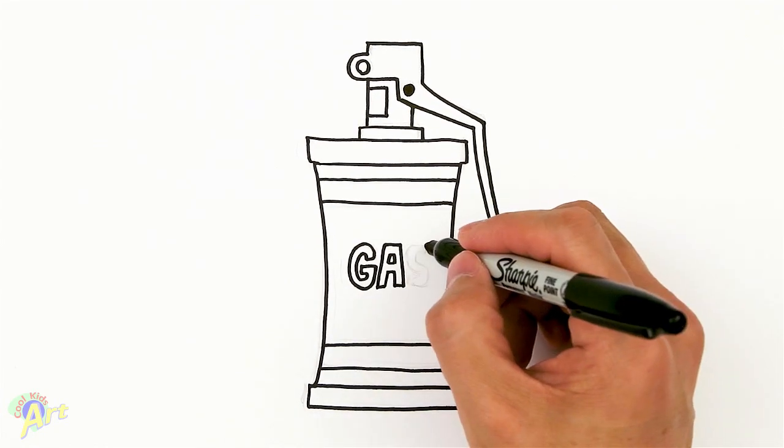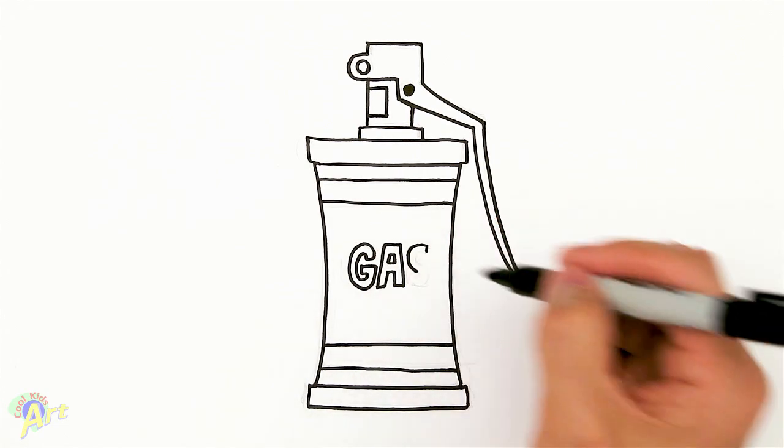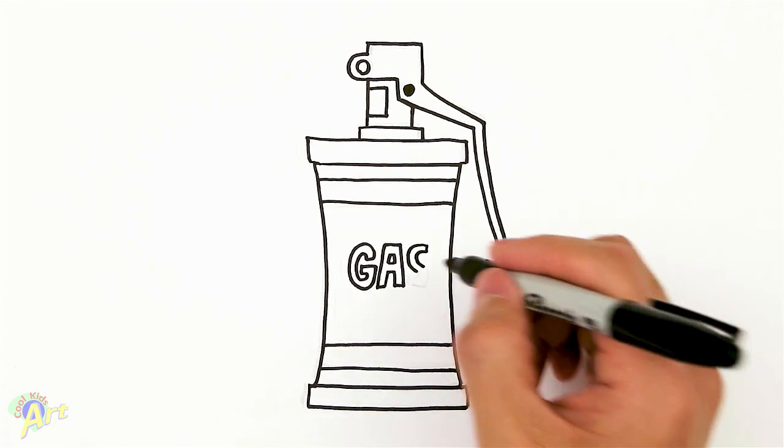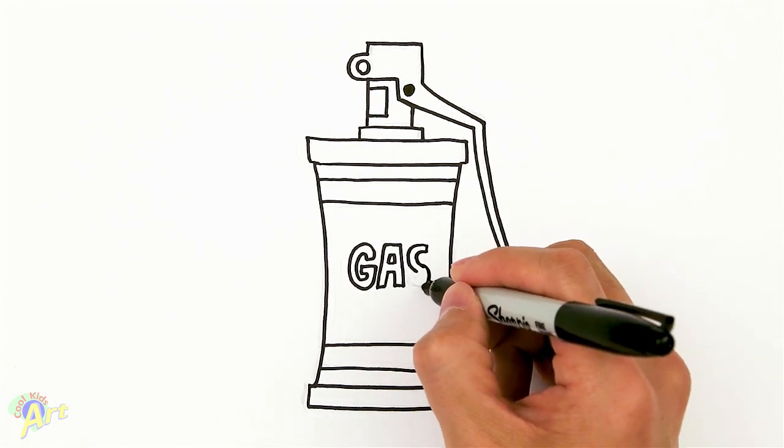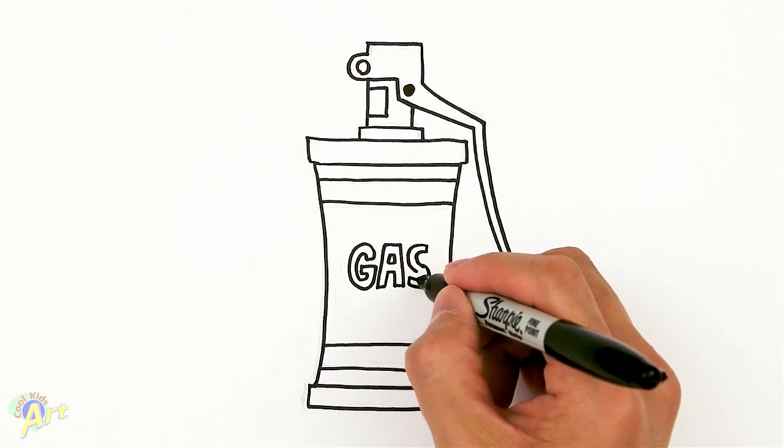And then for the S, draw S, come down, draw the outside. And then on the outside continue the outside all the way to the bottom. And now go up and then just connect this.